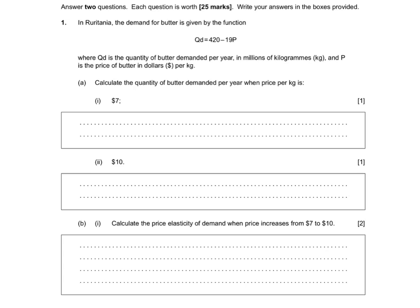In this first question we're given a demand curve for butter: Qd equals 420 minus 19P, where Qd is the quantity of butter demanded per year in millions of kilograms, and P is the price of butter in dollars per kilogram. It's important to make note of that information because you'll need that to provide the correct units to your answers.